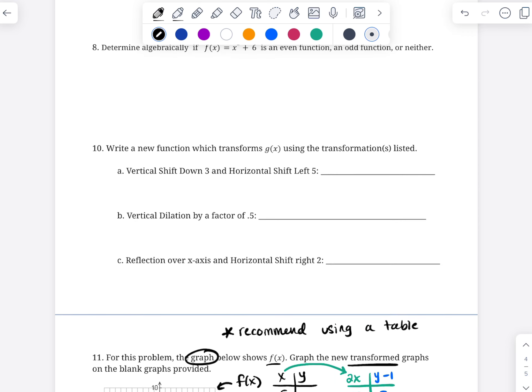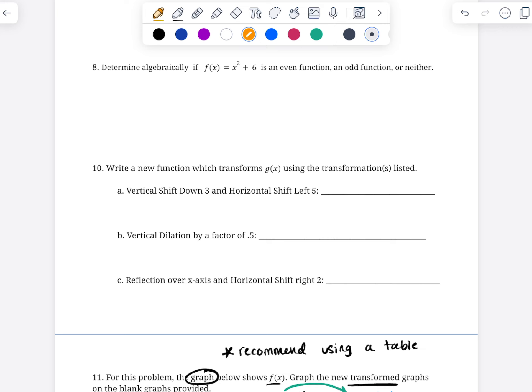So working backwards, I just want to remind you that when we're asking for new function, which transforms g(x) using these transformations, so this is saying, y equals vertical shift, down 3, horizontal shift, left 5, that's going to be like g(x + 5), because we do the inverse of what we think we're going to see, minus 3. And then if it's a vertical dilation, remember that that just looks how you would expect it to look. So 0.5 stays 0.5, or you could write a half g(x). Either one of those would be totally acceptable.